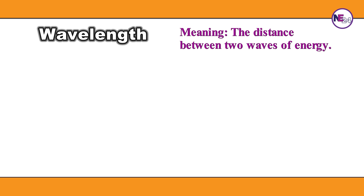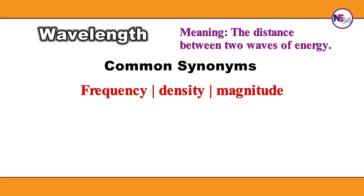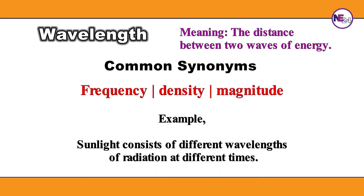Wavelength: the distance between two waves of energy. Frequency, density, magnitude. Sunlight consists of different wavelengths of radiation at different times.